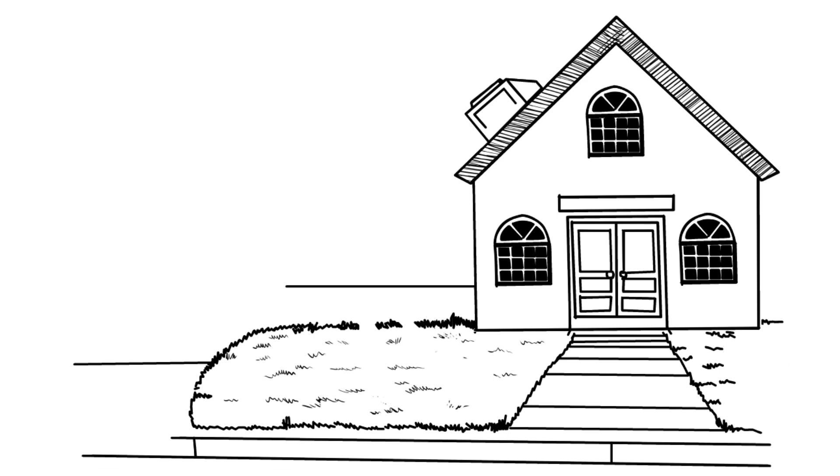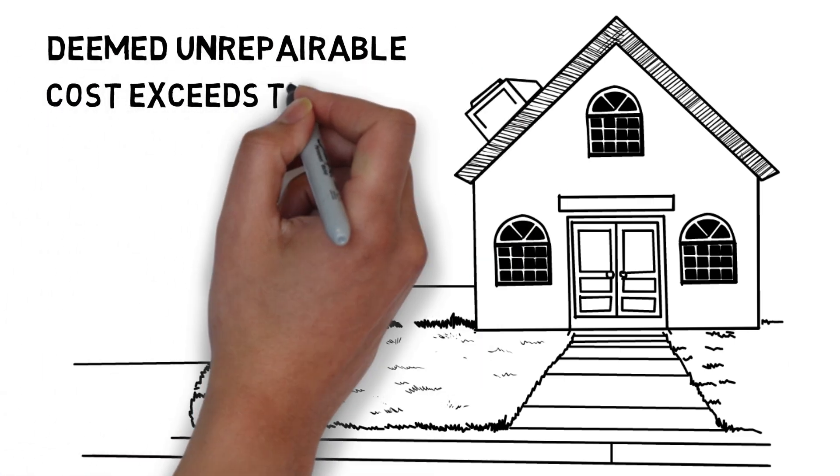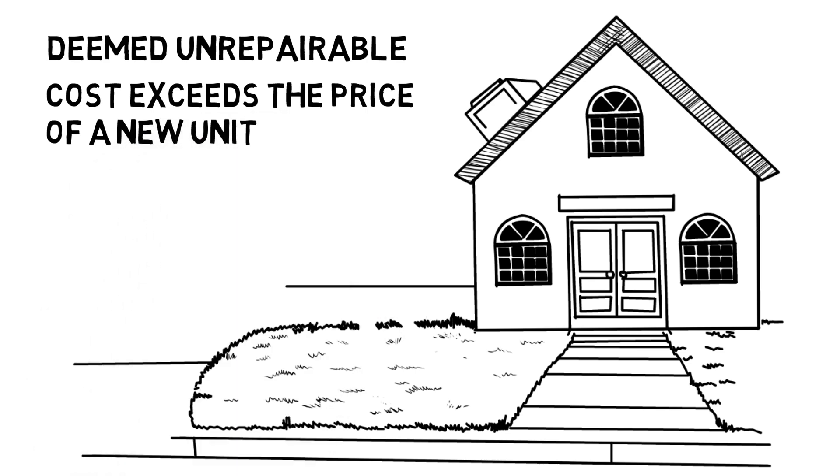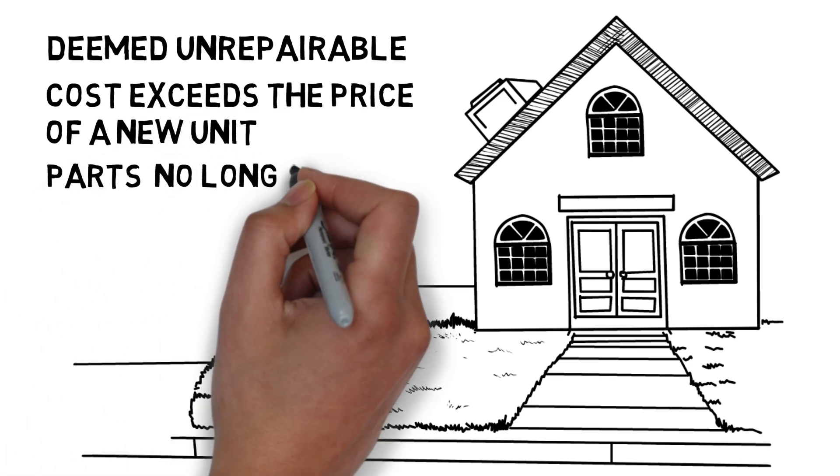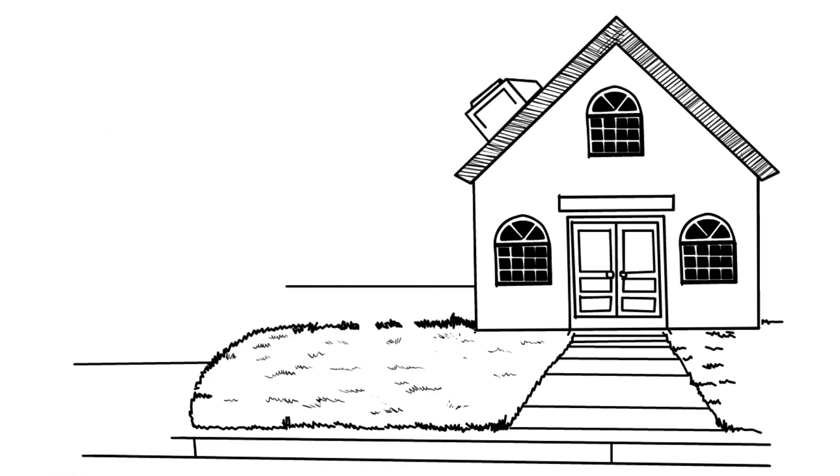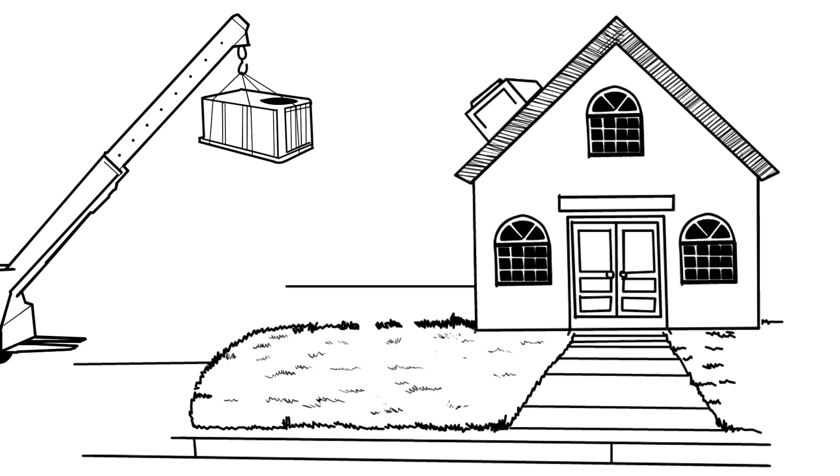There are specific parts in a packaged unit that can fail, and may be deemed unrepairable. This could either be due to the expense of the repair exceeding the cost of a new unit, or the part no longer being available. In either case, the entire system would need to be replaced with a new Puron system.